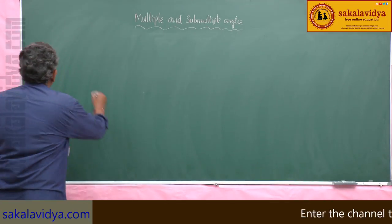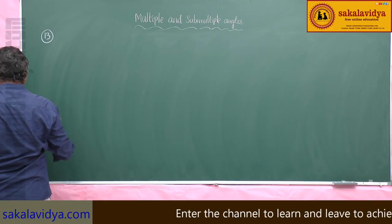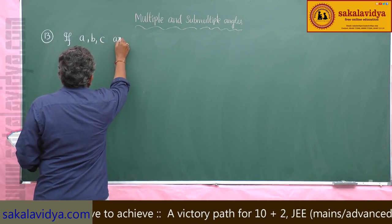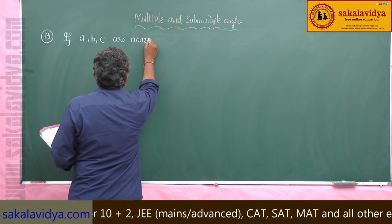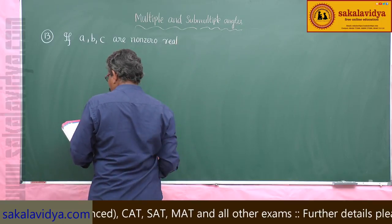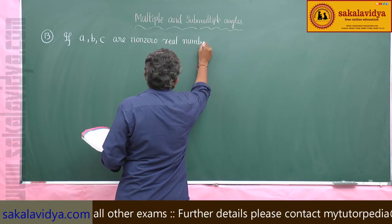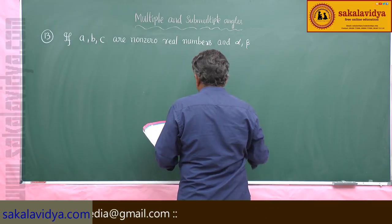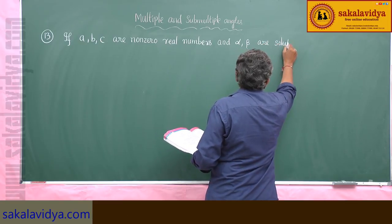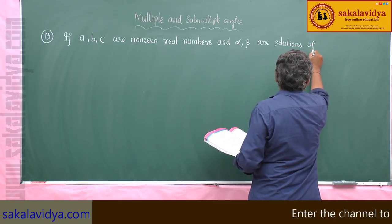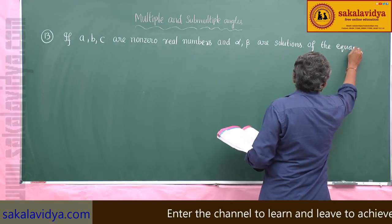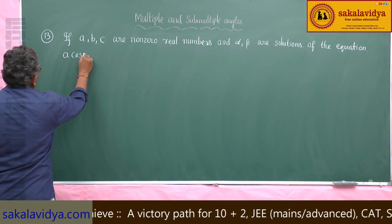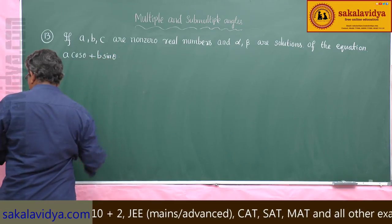Thirteenth problem. If A, B, C are non-zero real numbers, and alpha, beta are solutions of the equation A cosθ plus B sinθ is equal to C.